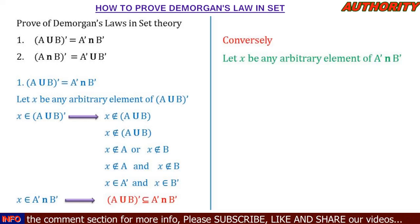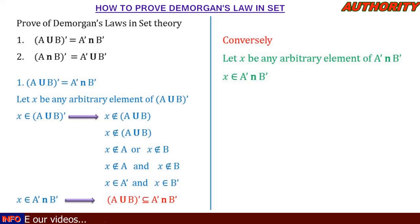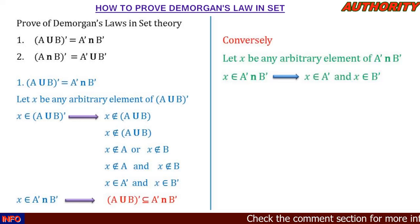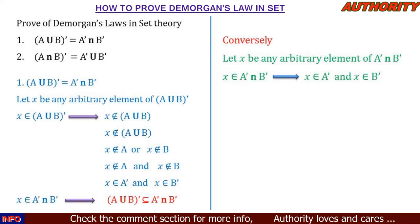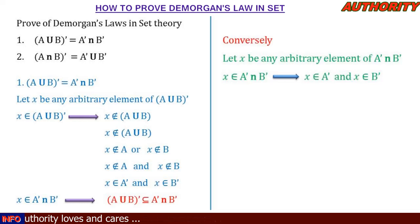Let x be any arbitrary element of A complement intersection B complement. So x exists in A complement intersection B complement, which means x is in A complement and x is in B complement. If x exists in A complement, it also means that x is not in A. And x existing in B complement also means that x is not in B.